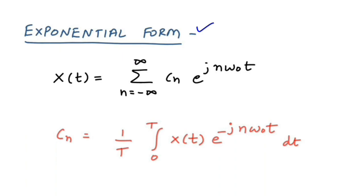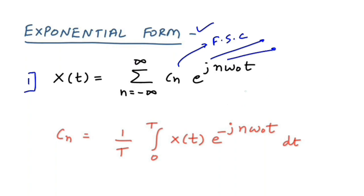We have two formulas for the exponential form. The first formula is x(t) = Σ cₙ · e^(+jnω₀t), summing from n = -∞ to +∞. The components here are: the Fourier series coefficient cₙ, the complex exponential term, the nth harmonic component, and the fundamental frequency component ω₀.